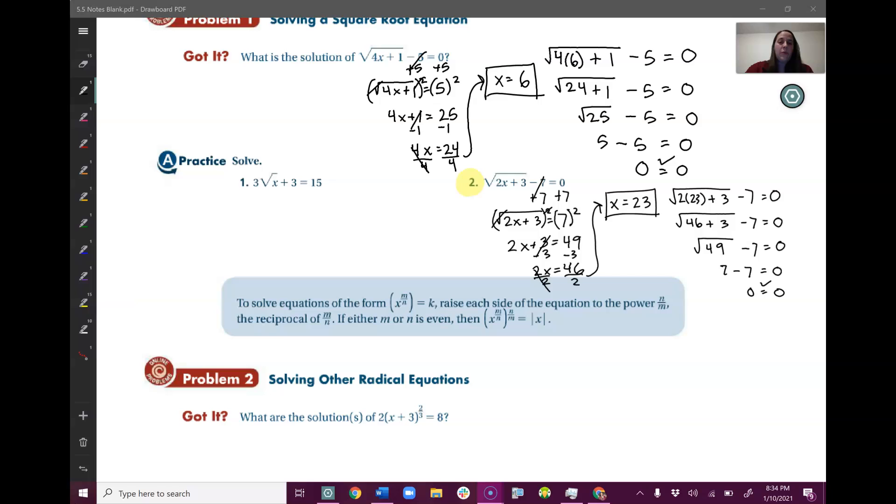Welcome back. Let's check what you got with what I got. So I got x equals 23. I added 7 to get the root by itself. Now that the root's by itself, I can square both sides to get rid of the root. So I got 2x plus 3 equals 49, and from there just solved for x by minusing 3 and dividing by 2.